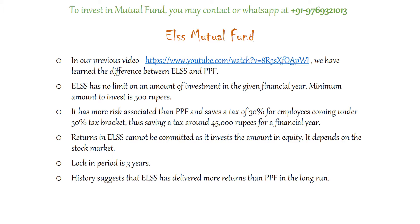In our previous video we learned the concept of rupee cost averaging through SIP, where a fixed amount gets invested on a set date in a given mutual fund. However, there is a minor drawback: if the investment date is the 2nd of every month but the NAV on that date is always higher than on other dates over the past year, the returns might be comparatively less. Since this is beyond our control, the returns earned can be lower with this approach.